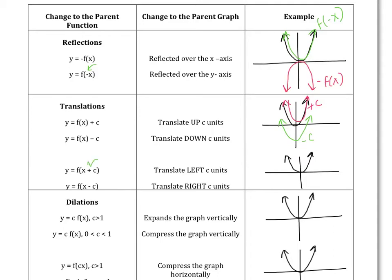If you're adding and subtracting inside your function, then that translates left and right. So remember, it's opposite of what the sign is telling you. So if you're adding a number inside your function, you're going to shift in the negative direction. So this is when you add c, you shift to the left. When you subtract c, you shift to the right. So it's backwards from what you might think.